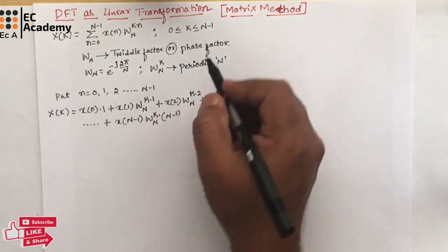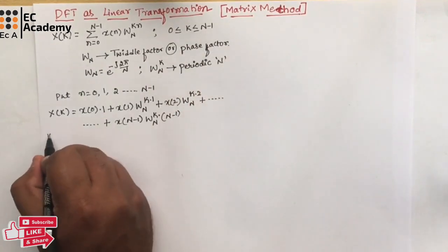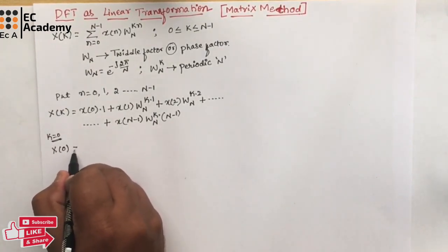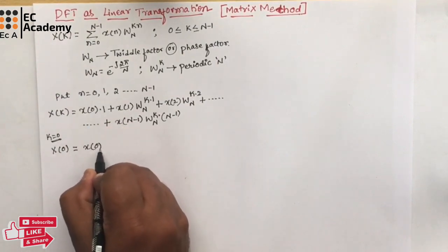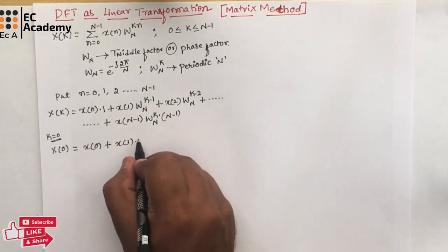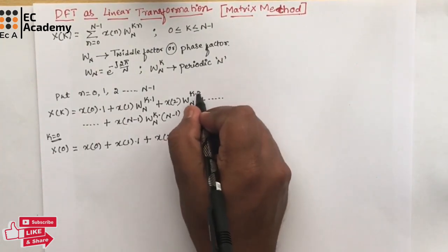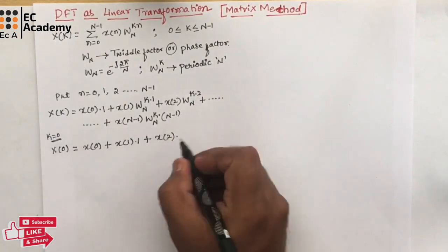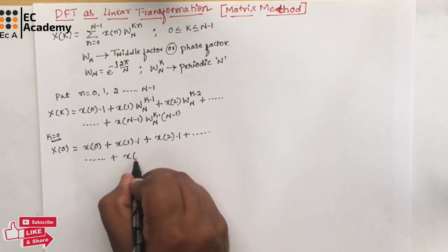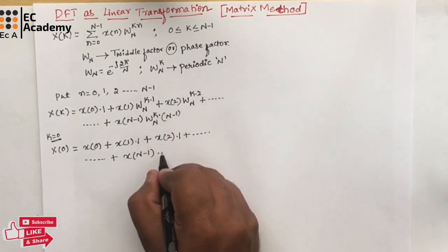For this equation, let us put k values ranging from 0 to N-1. If we put k = 0 in the above equation, then X(0) = x(0) + x(1)·1 + x(2)·1 + ... + x(N-1)·1, since all W_N^0 terms equal 1.